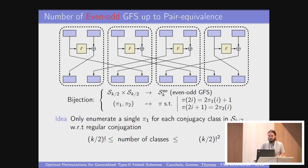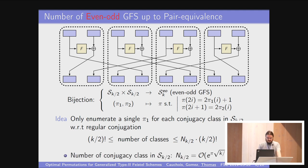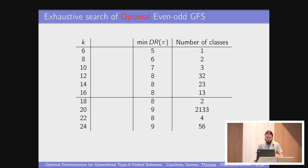But in fact, you don't have to exhaust all this big set. You can reduce the search space where the first permutation, PI1, can be simply one single one in a conjugacy class of SK over two. So you save up K over two factorial and replace by the number of conjugacy classes in the permutation group over K over two elements. To see how big the saving is, you go from factorial K over two to something that is in big O of exponential square root of K.